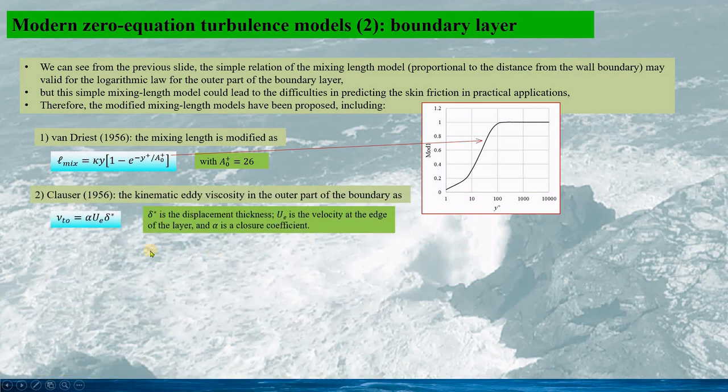In 1956, Clauser formulated the kinetic eddy viscosity in the outer part of the boundary as this. So here delta^* is the displacement thickness, and u_e is the velocity at the edge of the layer, and alpha is the closure coefficient.